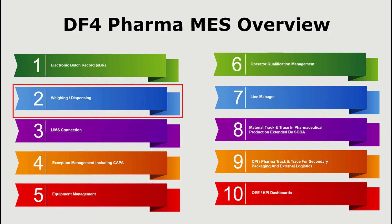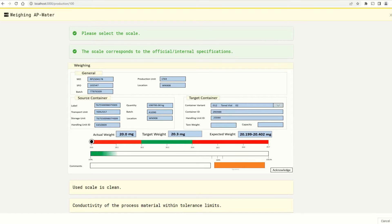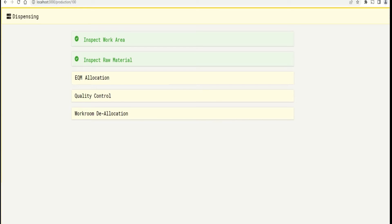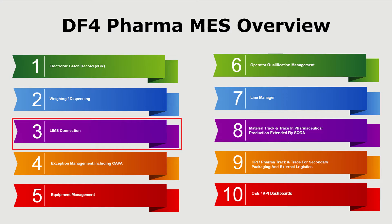Weighing and dispensing in DF4 Pharma MES offers several benefits for pharmaceutical manufacturers. Accurate weighing and dispensing of materials are critical steps in the pharmaceutical production process. Weighing and dispensing with real-time connection to DF4 Pharma MES offers pharmaceutical manufacturers a comprehensive solution for accurate and efficient material handling, resulting in improved quality, productivity, and regulatory compliance.